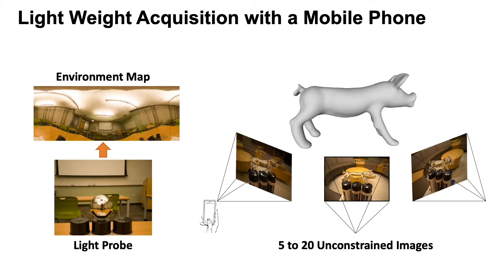Our acquisition setup is quite easy. It only requires a known but arbitrary environment map captured from a light probe and 5 to 20 unconstrained images of transparent objects taken by a mobile phone camera.